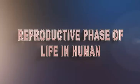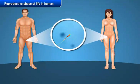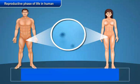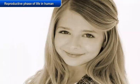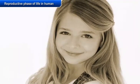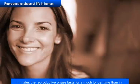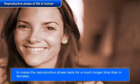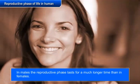Let us learn about the reproductive phase in humans. On the onset of puberty, both males and females become capable of reproduction. In males, the testes begin to produce male gametes called sperms, and in females, the ovaries begin to produce eggs. In males, the reproductive phase lasts for a much longer time than in females.